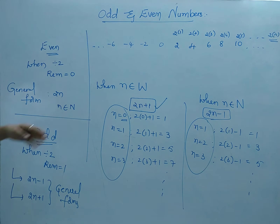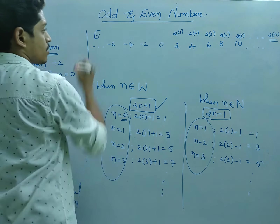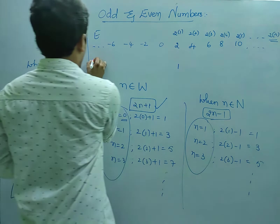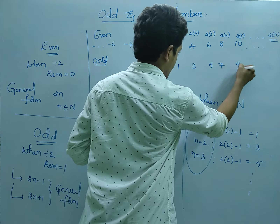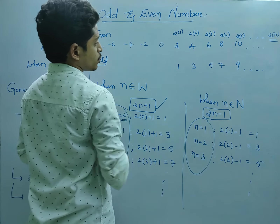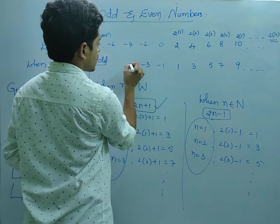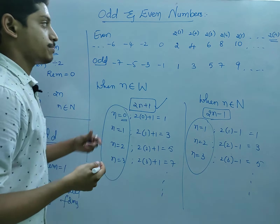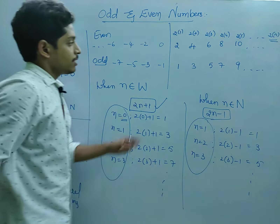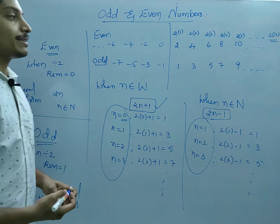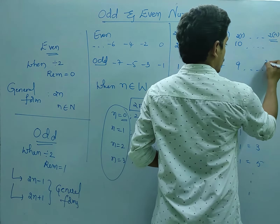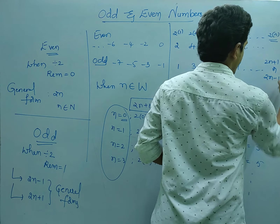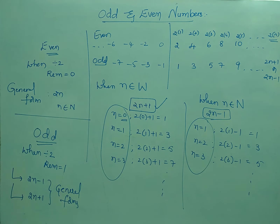I hope you understand. Once you go through all these numbers — even numbers start from 2, while odd numbers start from 1: 1, 3, 5, 7, 9 and so on. We can also consider negative odd numbers: minus 1, minus 3, minus 5, minus 7 and so on, up to infinite. So please make a note of this.